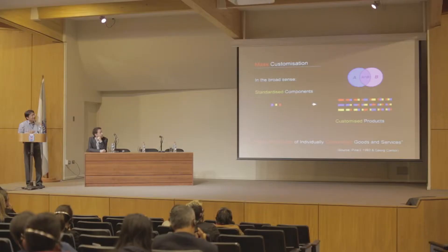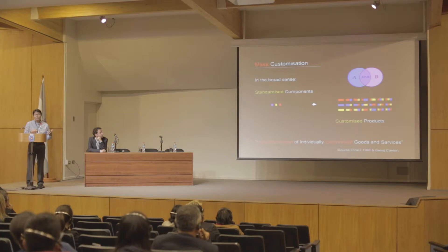Generally speaking, what is mass customization? Mass customization is all about combinations — combinations of standardized components — where the combination helps customize the end product. Joseph Pine II described it as the mass production of individually customized goods and services — not only products but services as well.